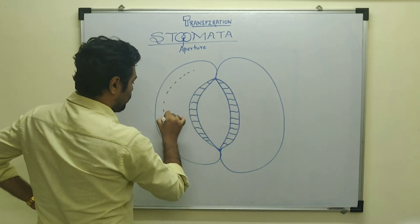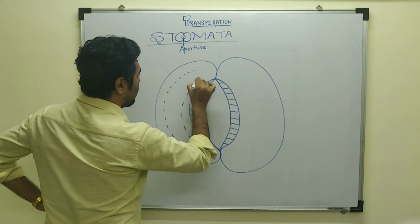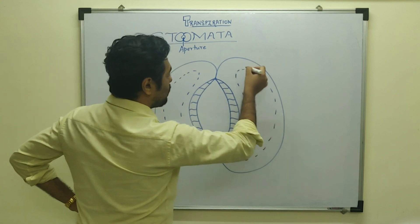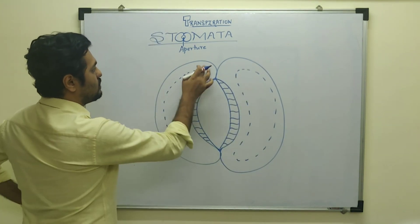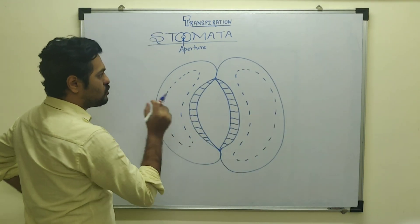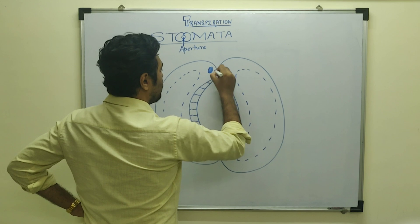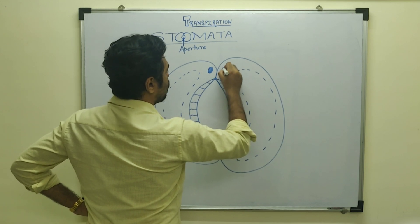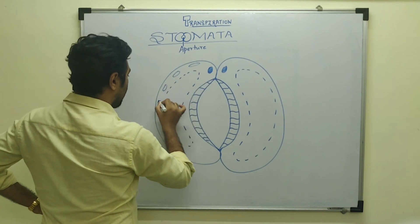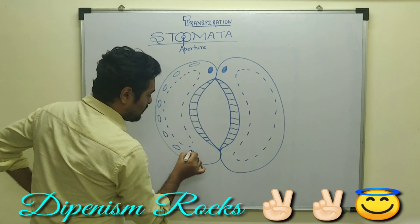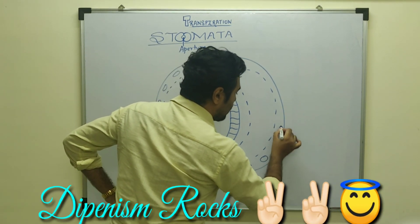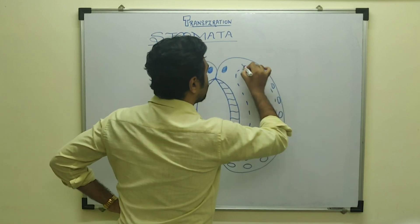The guard cell has a large central vacuole containing cell sap, which causes the cytoplasm to be pushed to the periphery. The guard cells are living cells, meaning there is the presence of a nucleus plus additional cell organelles, mainly those that help in the process of photosynthesis.